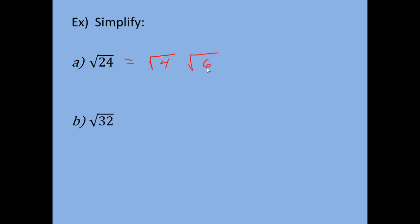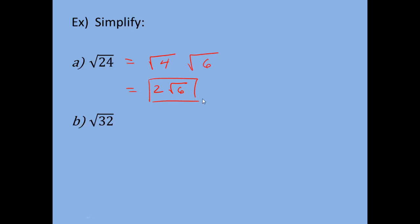4 times 6 is what gives me 24, so I have the perfect square in the first square root symbol and the non-perfect square in the second. I take the square root of 4, simplifying that as 2. Notice the square root symbol is gone — we did the operation, so we don't write it again. The square root of 6 doesn't simplify any further; there are no perfect squares that are a factor of 6. So we write it as 2√6.